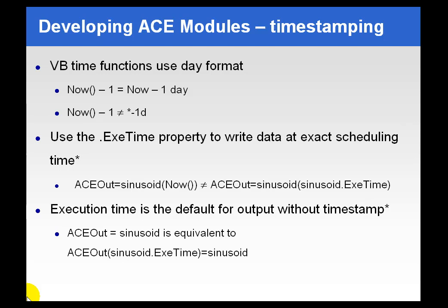Just some notes about times and time-stamping in pi-ace. Remember that pi-ace functions — the time functions — aren't the same as pi-time functions. For example, now(-1) equals one day ago, one day in the past. Whereas, now minus one is not the equivalent of asterisk minus one D anymore. So don't use the pi-time constructions in your calculation constructions.